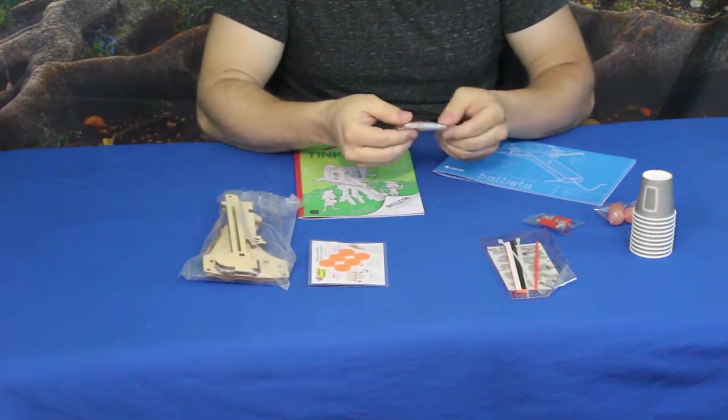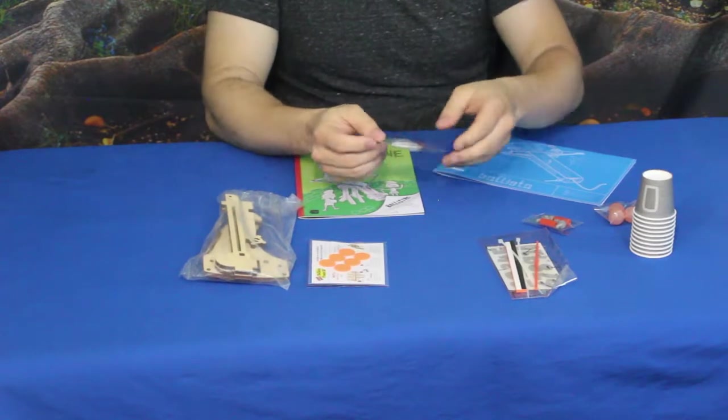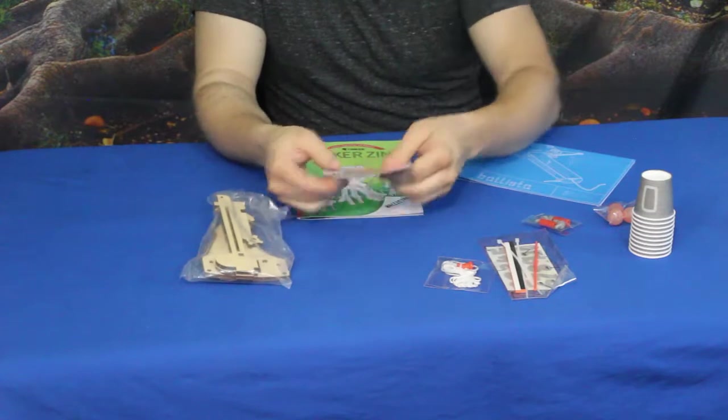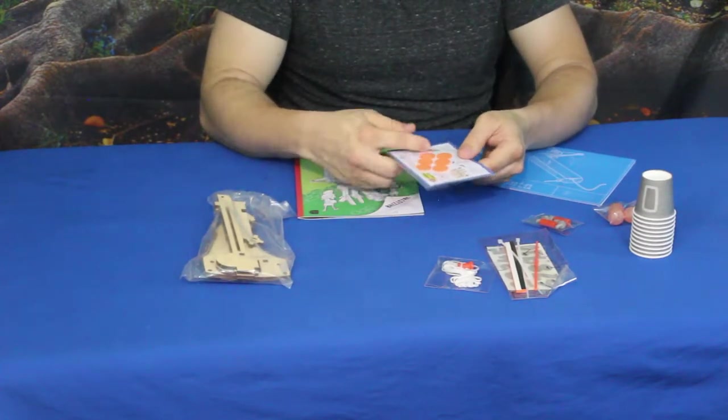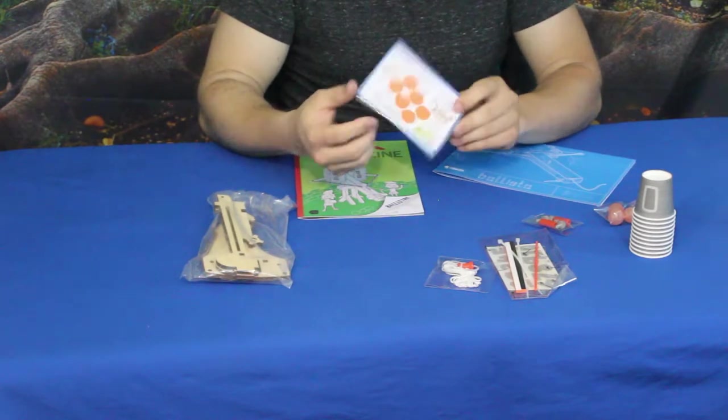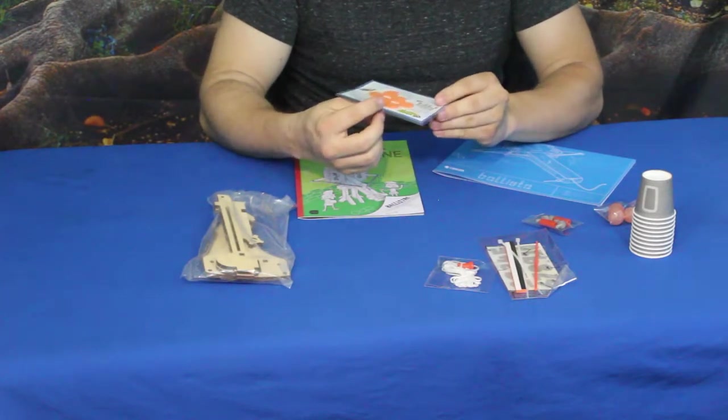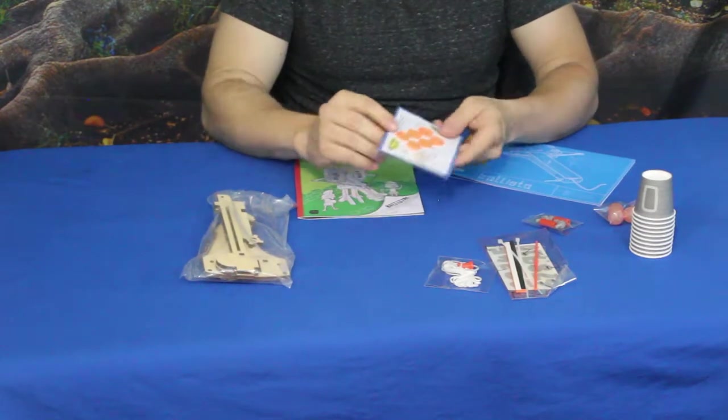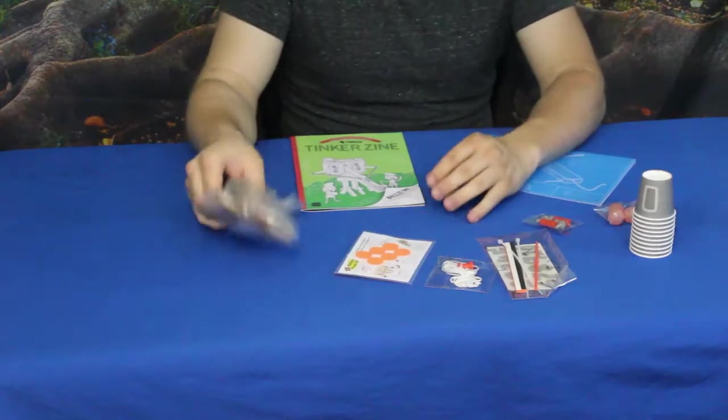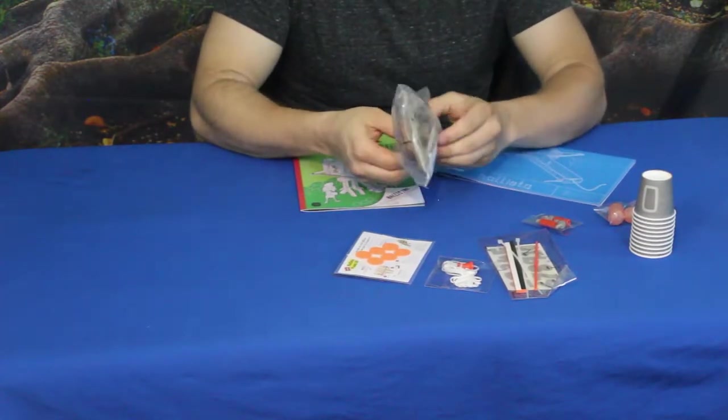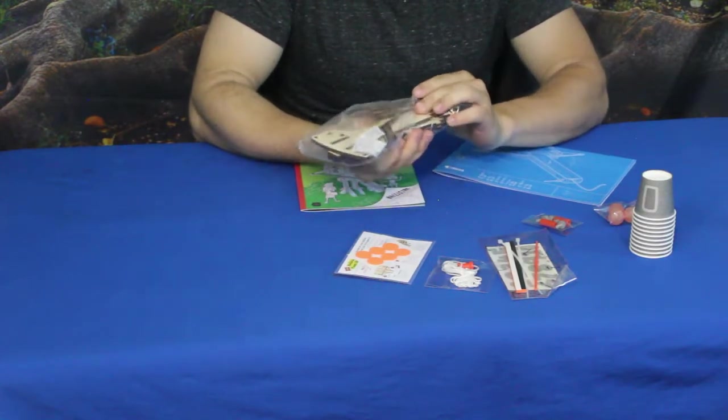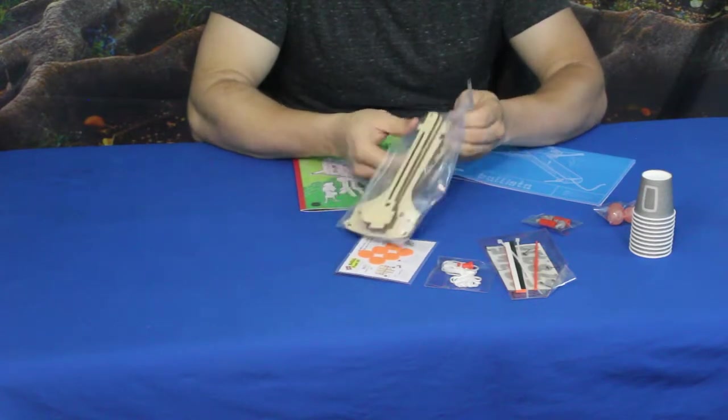We've got some string along with a little like bobbin type thing on it. I'm sure that's going to be what we use for the ballista to shoot our stuff. And then we've got some little foam stickies as well as, I'm guessing, some additional instructions looks like, along with it, to help you make sure that you get all that stuff on there the right way. And then we've got the laser etched or laser cut out wood pieces, all the pieces that are going to be put together to get the ballista up and running. This of course will be the body and frame of the ballista.